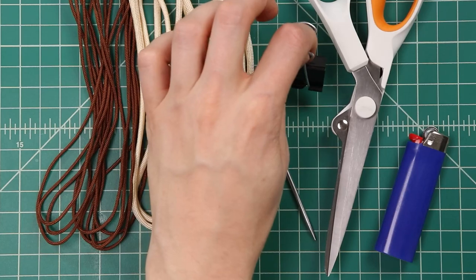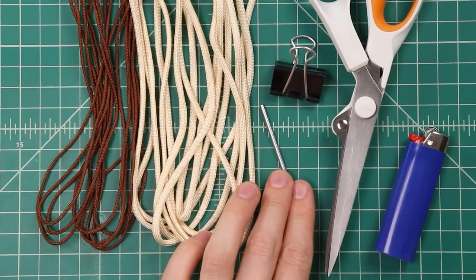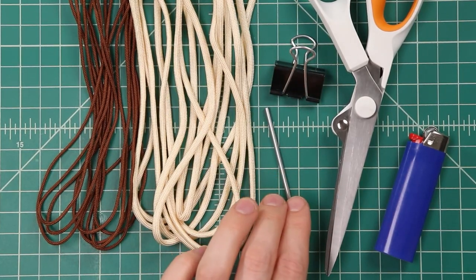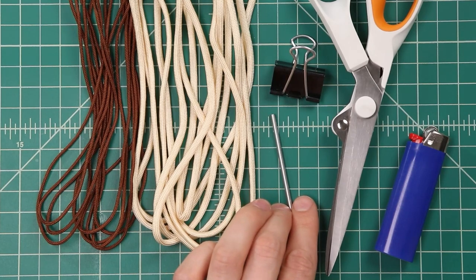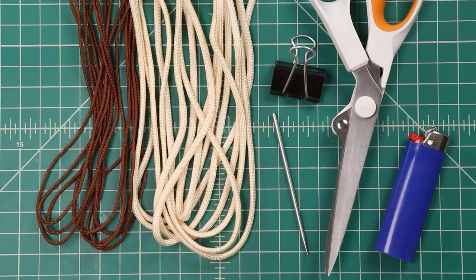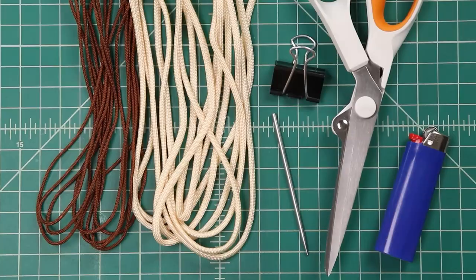You'll also need a binder clip to hold things in place, and a type 1 fid. You don't necessarily need this, it will make it easier, but I like to use one on video so that you can tell exactly where I'm weaving the cord through. So with all that out of the way, let's dive in.